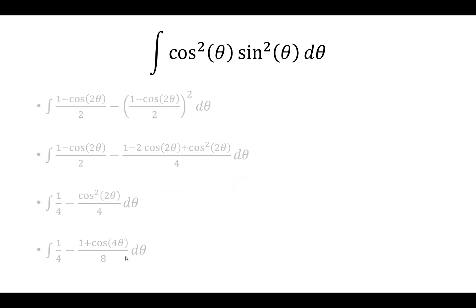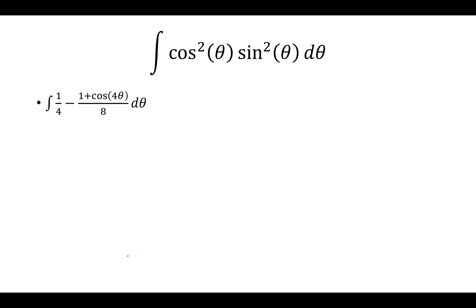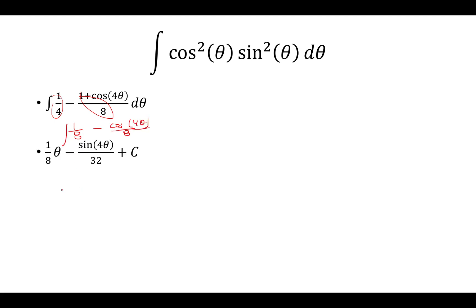Now we can integrate this, but let's do a little more simplifying first. We have 1/4 minus 1/8, which gives us 1/8, and then minus cosine 4θ over 8. So we integrate that to get (1/8)θ minus sin(4θ)/32 plus C. And that is our final answer.